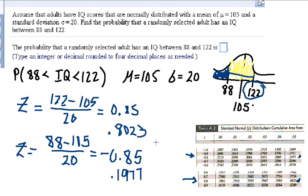So to get the area in between 122 and 88, I first calculate the area, all the area less than 122. And then I'm going to subtract off this blue region, which is my 0.1977. So it's 0.8023 minus 0.1977, or I get a probability of 0.6046.